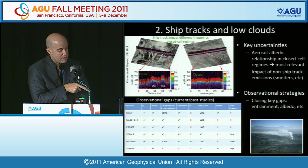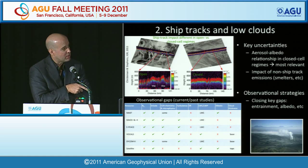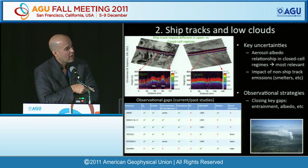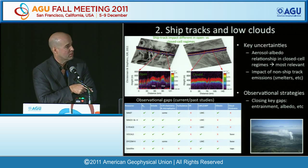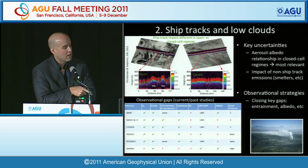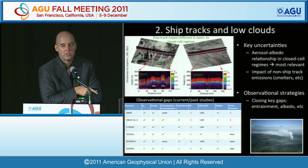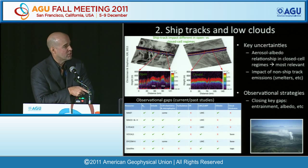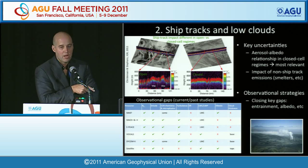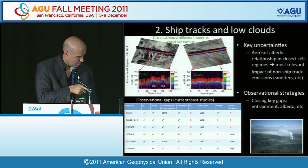Towards observational strategies, we looked at existing datasets and campaigns like MACE, EPS, and VOCALS to assess what parameters of interest are covered. Two things that stand out are that entrainment rate is generally not available in most of these studies, nor is cloud thickness or albedo. Closing observational gaps such as entrainment and albedo in future studies is one of the foci we'll be looking at.